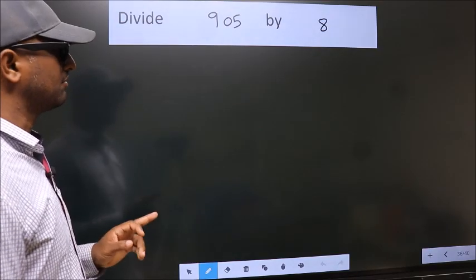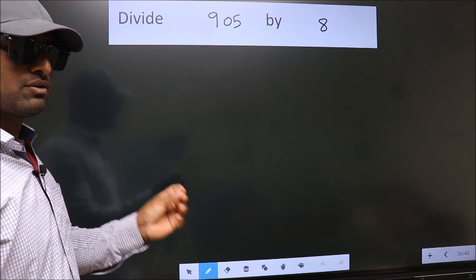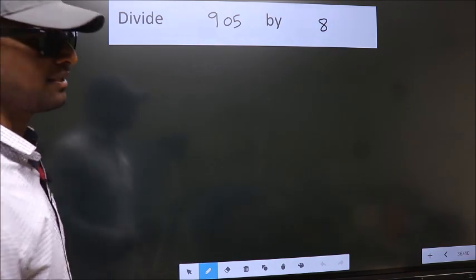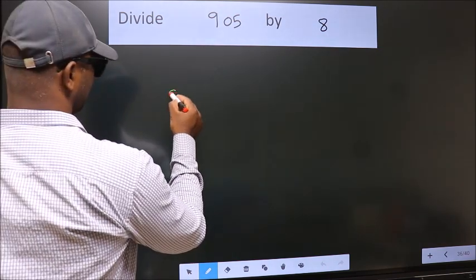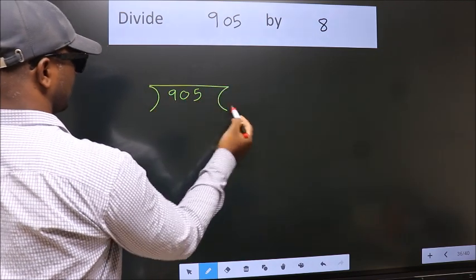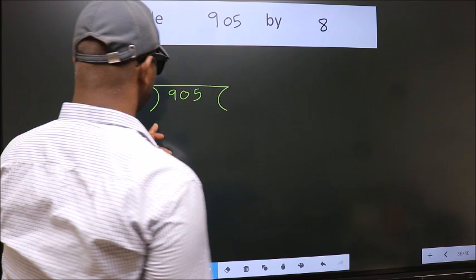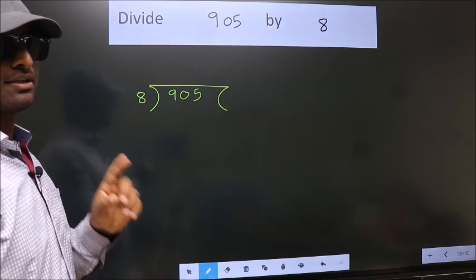Divide 905 by 8. To do this division, we should frame it in this way. 905 here, 8 here. This is your step 1.